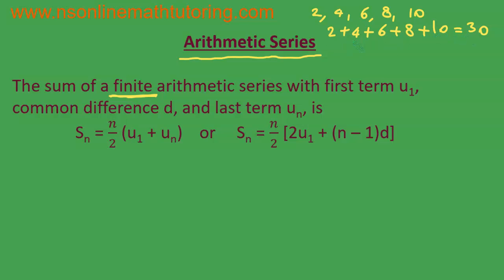So the sum total of this arithmetic series is equal to 30. They have also given us a formula for the arithmetic series: the sum of a finite arithmetic series with first term u1, common difference d, and last term un is given by Sn = n/2 × (u1 + un), where Sn is the sum of the first n terms.